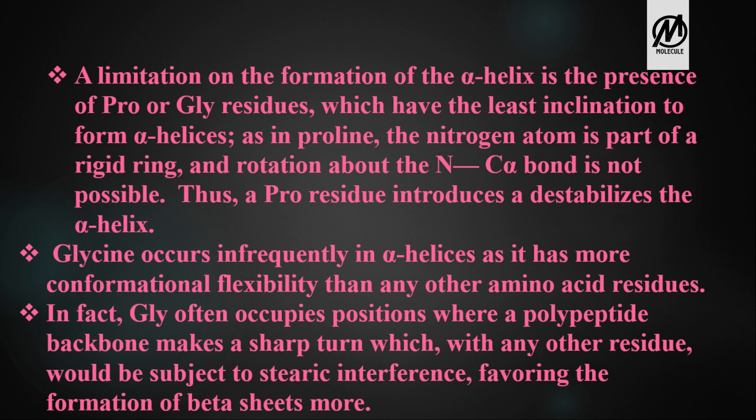Glycine occurs infrequently in alpha helices because it has more conformational flexibility than any other amino acid residue. In fact, glycine often occupies positions where a polypeptide backbone makes a sharp turn, which with any other residue would be subject to steric interference, thereby favoring the formation of beta sheets.